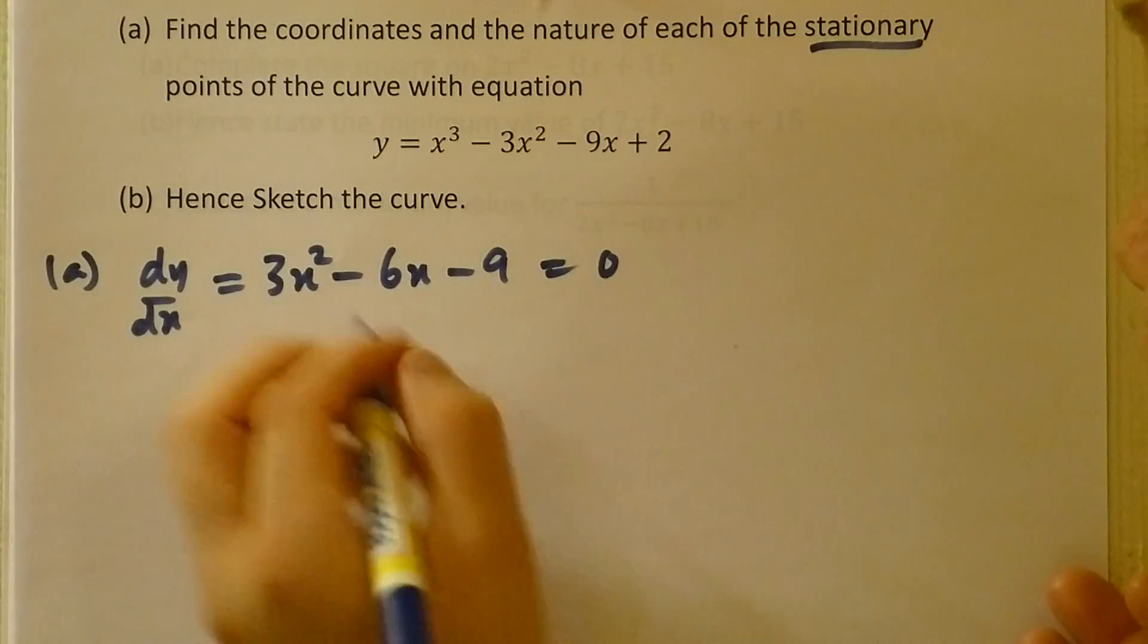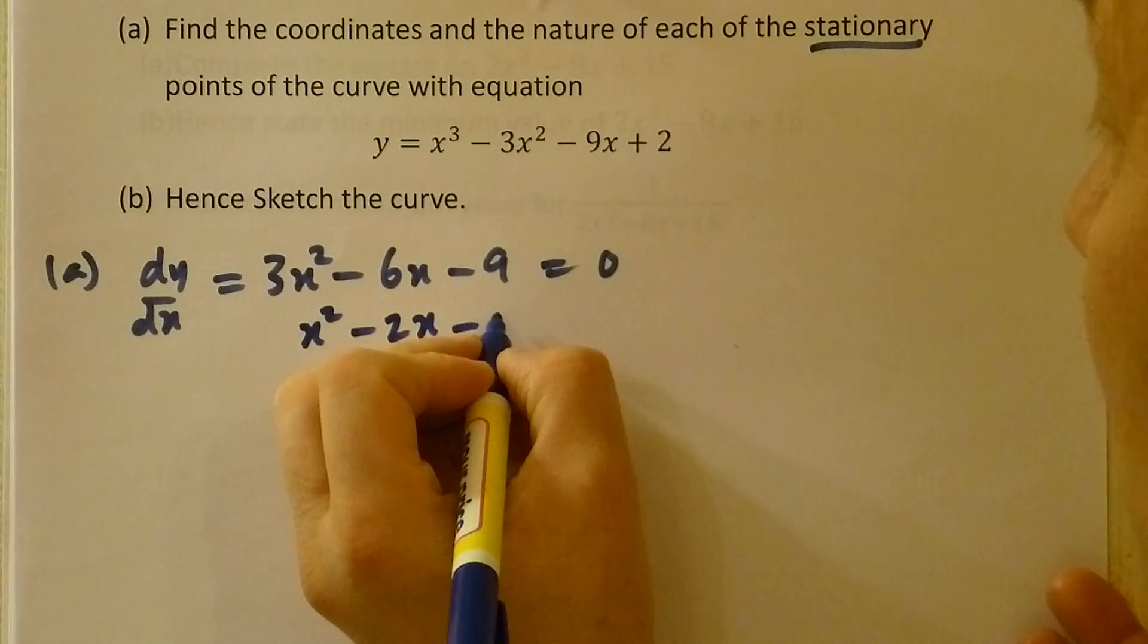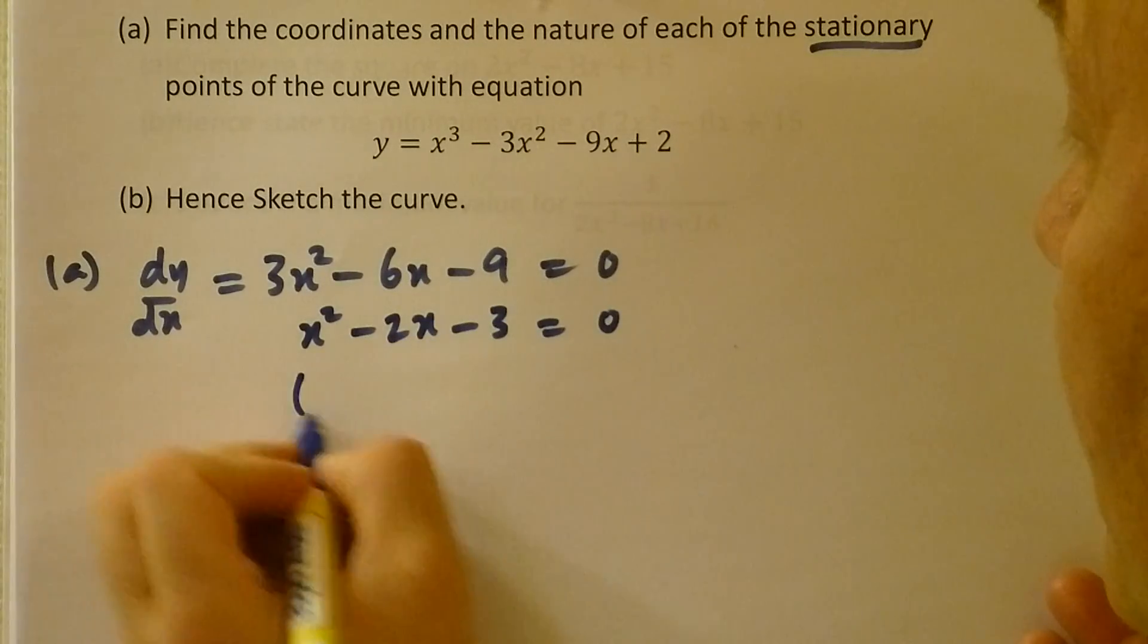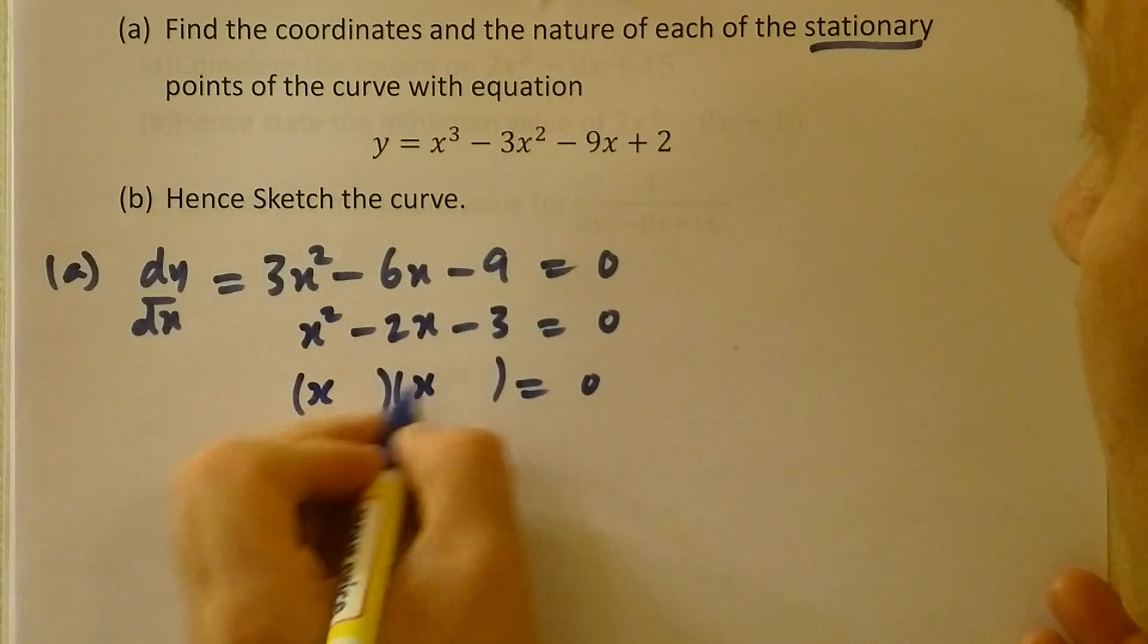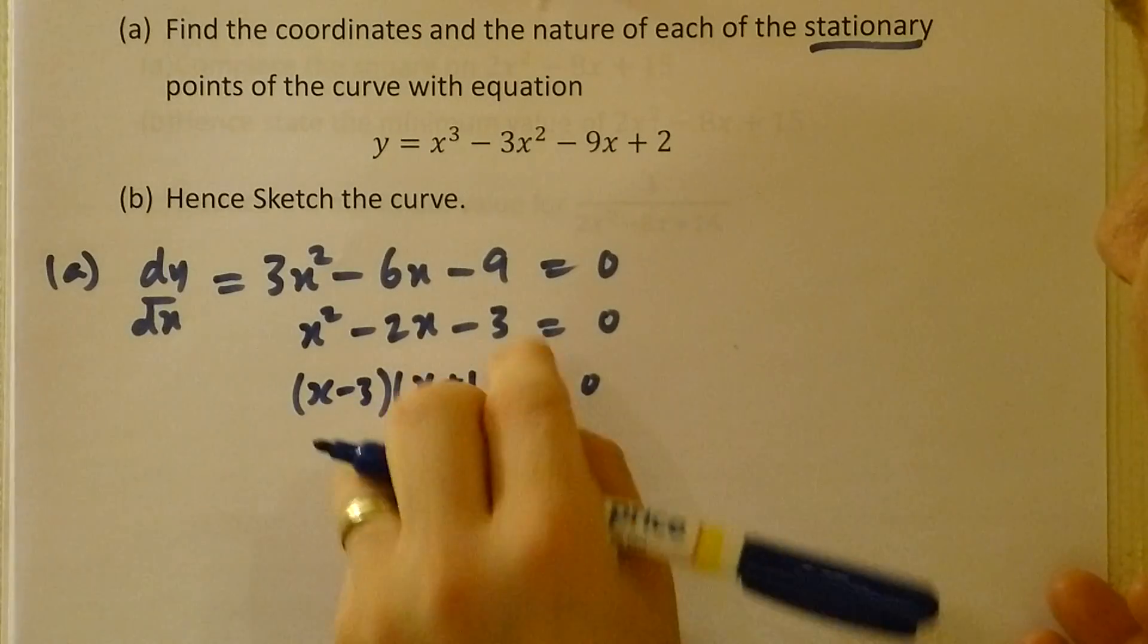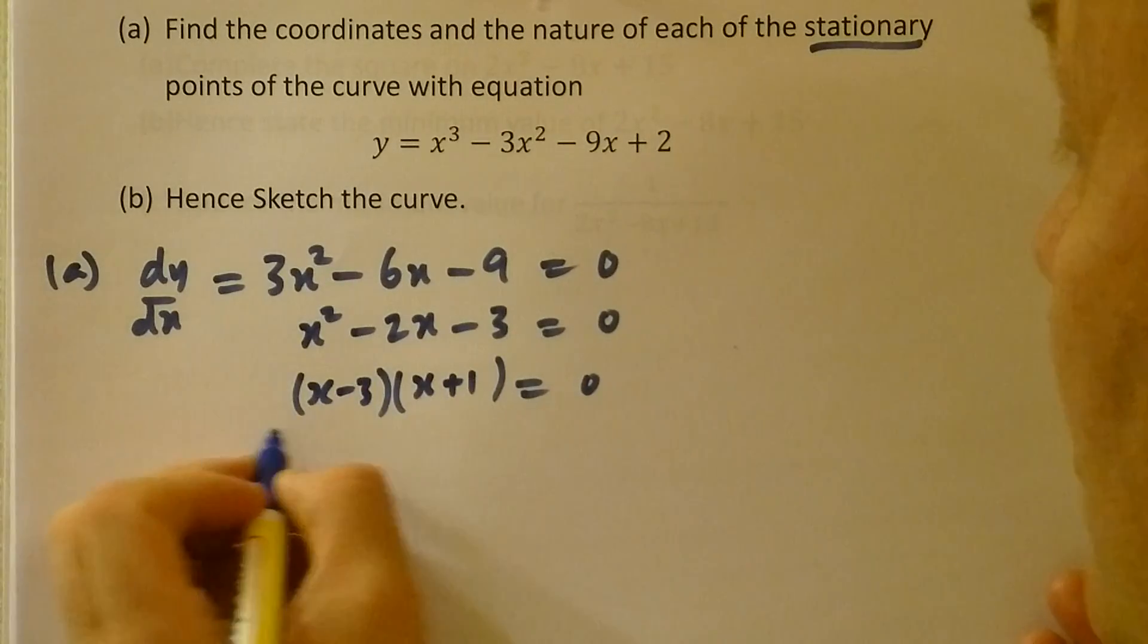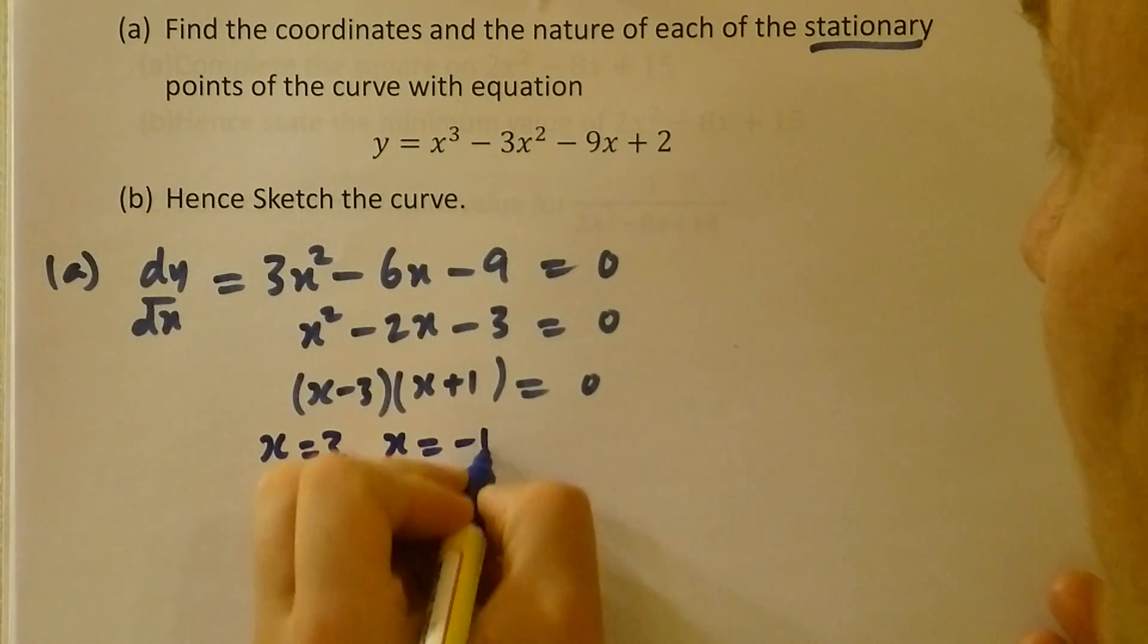Here I can see that I've got a factor of 3 throughout, so I divide by 3 to make the problem a little easier. And that will factorize. -3 and +1 will give us the -2x in the middle and the -3 at the end. So therefore, x is equal to 3 or x is equal to -1.